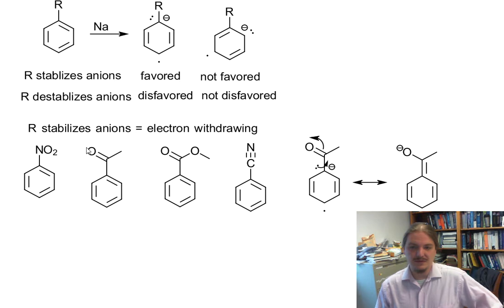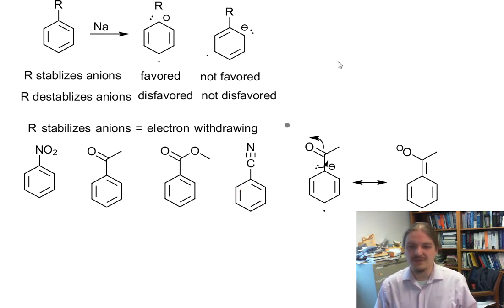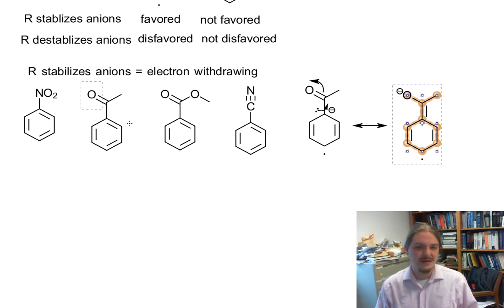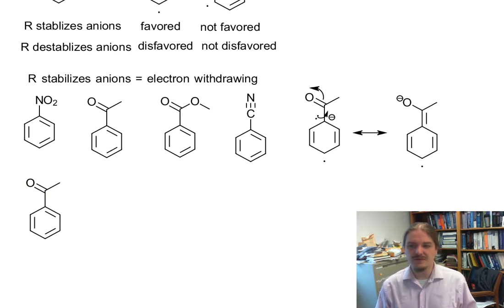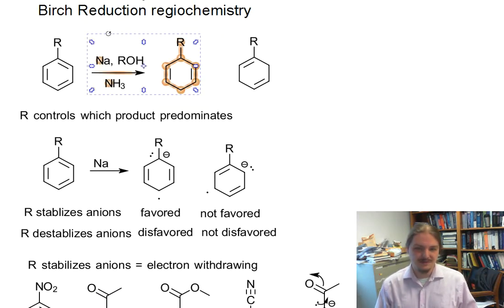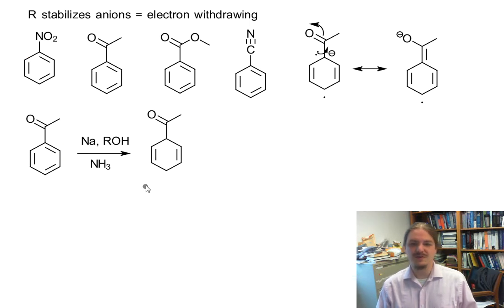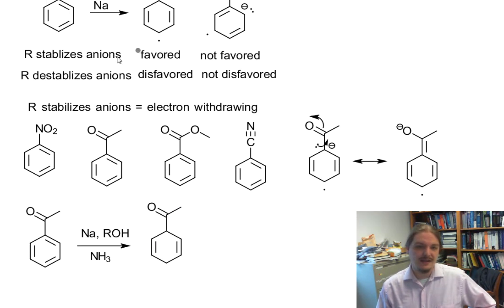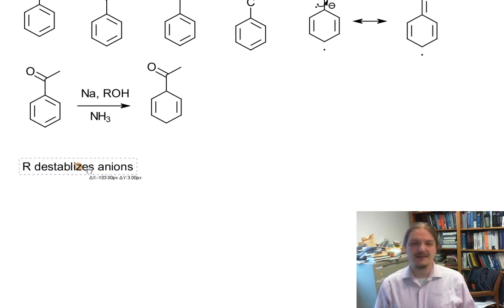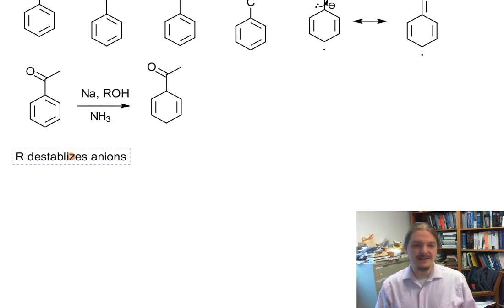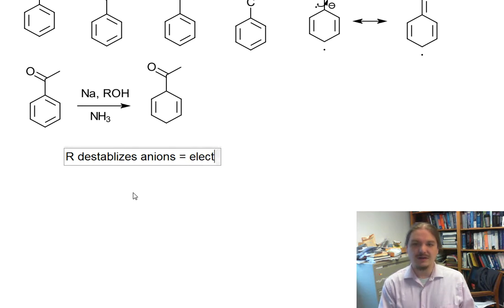Electron withdrawing groups will stabilize the intermediate that puts the anion next to that electron withdrawing group. So electron withdrawing groups, like a ketone, under Birch conditions preferentially form the regioisomer where the electron withdrawing group is on one of the sp3 hybridized positions — and that's because that's where the anion formed. You could also make a case that the second intermediate, which is also an anion, can be stabilized this way. But if R destabilizes anions, the types of things that destabilize anions are electron donating groups.